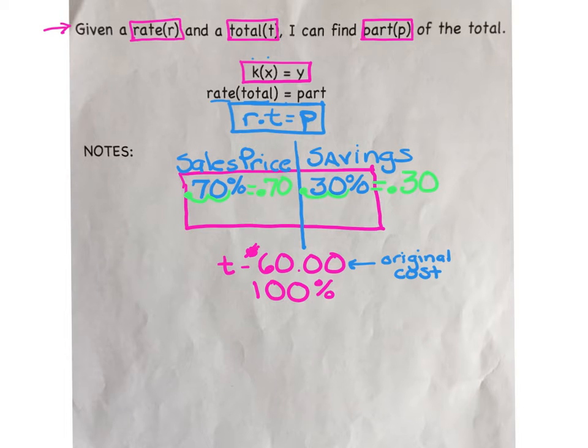Of those two rates, the 30% is known as the discount rate. That is the rate at which we save. The 70%, well that represents the sale price rate. That's the rate at which we spend on this particular jacket.